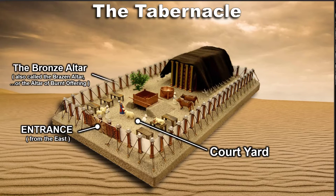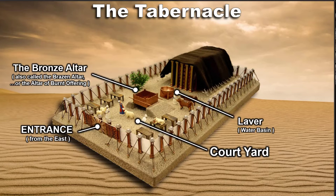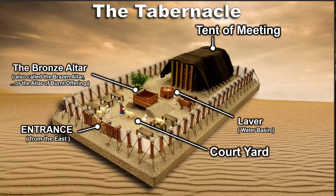The next piece of furniture is the bronze altar, also called the altar of burnt offering or the brazen altar — three names for the same thing. This is where you would bring the animal: the head of the family would lay hands on the animal, cut its jugular vein, kill it, and then the animal would be burnt on this altar. Next is the laver — a water basin where the priests would wash their hands and their feet before going into the tent building, which is called the tent of meeting. That was located towards the back of the sanctuary.